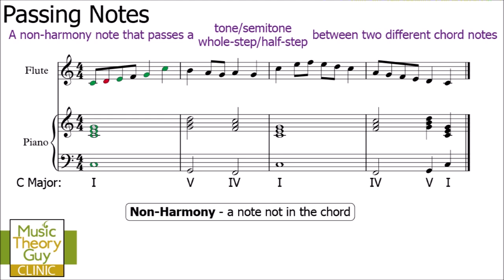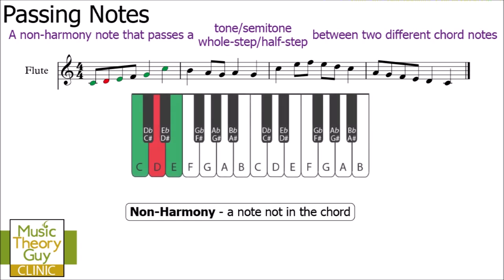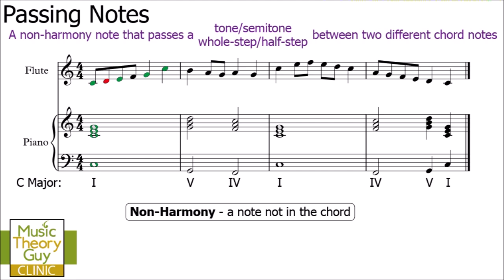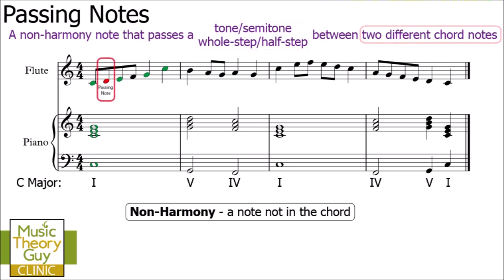Let's focus on the note D, which I've highlighted red. It's not a chord note, so we refer to it as a non-harmony note. On the keyboard, we can see it's a tone from C to D and also a tone from E down to D. Comparing that with our definition: it is a non-harmony note that passes a tone or semitone between two different chord notes either side of it — so D is a passing note.